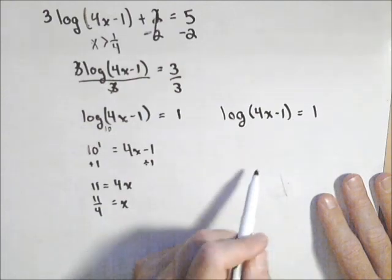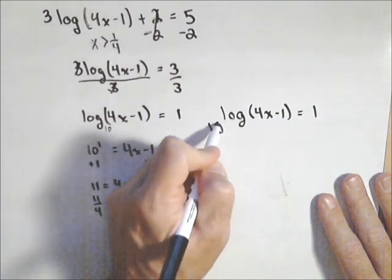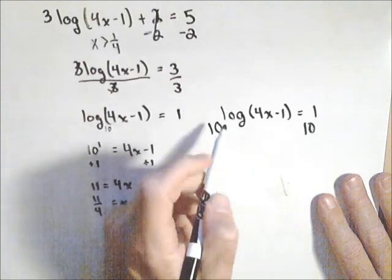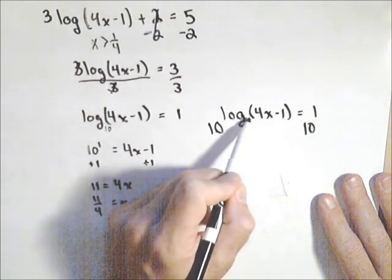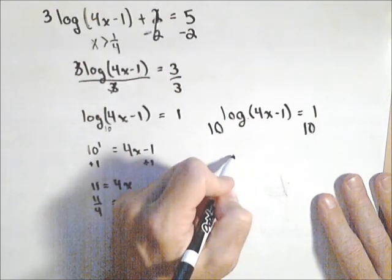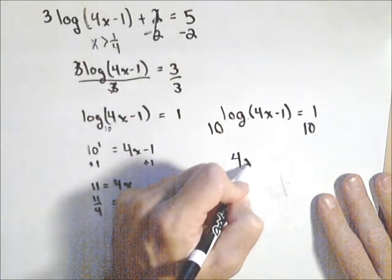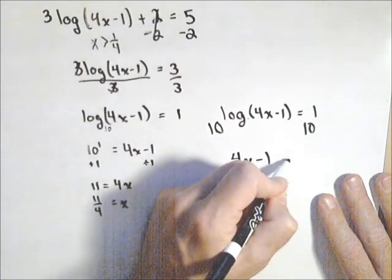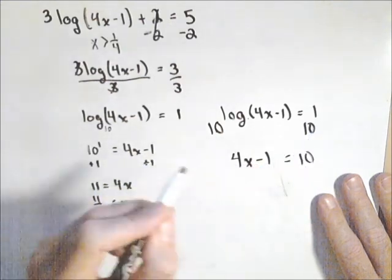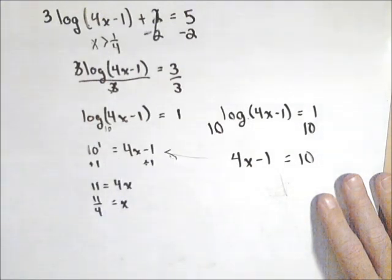The other way you can think about it is making both sides exponents of 10. Because we have a property of logs that says if this base and this base are the same, they essentially cancel and we get left with four x minus one. And over here it's 10 to the first or 10. And we get to the same place we were before.